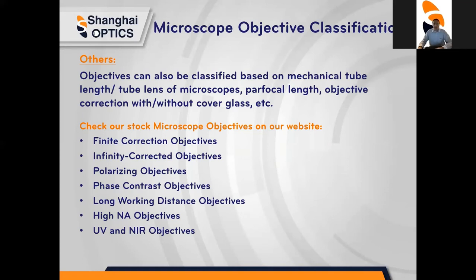Shanghai Optics has stock options such as finite corrective objectives, infinity corrective objectives, polarizing objectives, UV, NIR objectives, and many many more. To check out our stock microscope objectives, please visit our website at www.Shanghai-Optics.com.